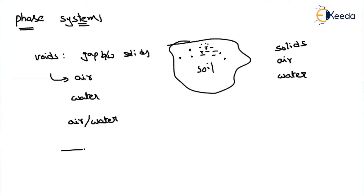As all these are in an irregular manner, it will be difficult to understand. So what we will do is draw a shape such that all the solid particles are drawn in one way, all the air gaps drawn in one way, and all the water drawn in one way. Those are called nothing but a phase system.